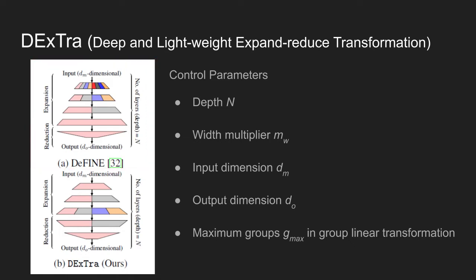The DExTra transformation block is controlled by five configuration parameters: depth N, width multiplier M_W, input dimension d_in, output dimension d_o, and maximum groups g_max in a group linear transformation.